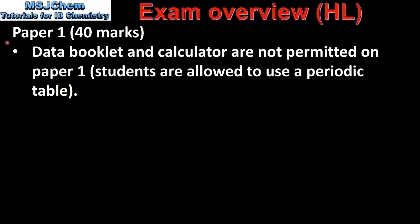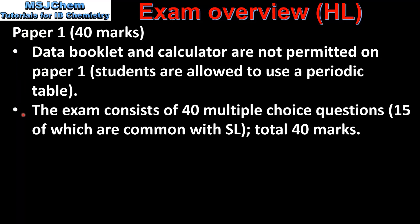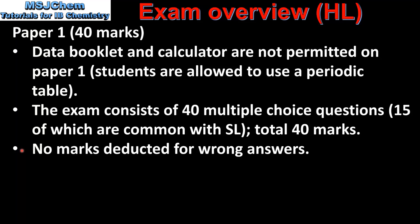Next we'll take a closer look at papers 1, 2 and 3. Starting with paper 1 which is worth 40 marks. In paper 1 a data booklet and calculator are not permitted. However, students are allowed to use a periodic table which is given on the inside front cover of the exam paper. The paper 1 exam consists of 40 multiple choice questions of which 15 are common with the standard level, giving a total of 40 marks. Each question has 4 possible answers of which 1 is correct, and no marks are deducted for wrong answers.